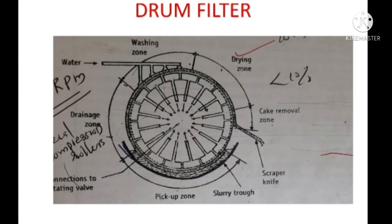The drum filter consists of a metallic cylinder which is mounted horizontally. This drum filter has a curved surface, and this surface is made up of a perforated plate — our curved surface has a number of perforations. This perforated plate provides support to our filter cloth, which is placed on the perforated plate.